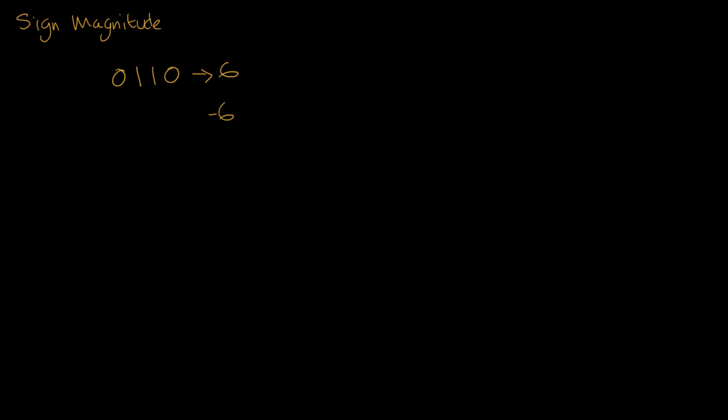The first bit, this first bit here represents whether or not it's a positive number or a negative number. So if it's a 0, this means it is positive. If it's a 1, it means it's negative.